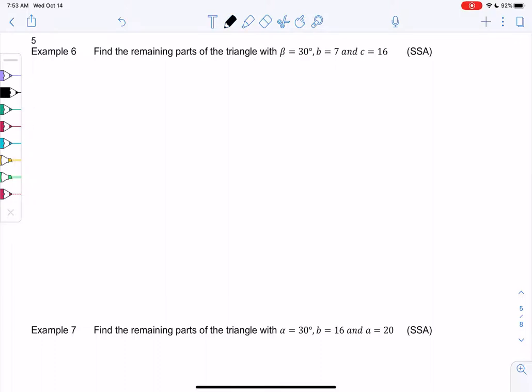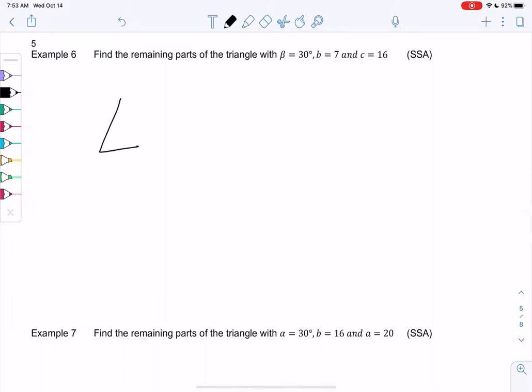We have angle beta or B. It's 30 degrees. We know c is 16 and then b is 7. So b has to be the opposite side.